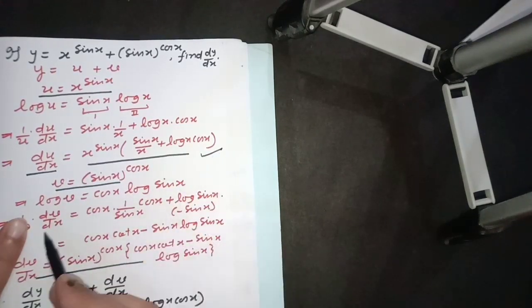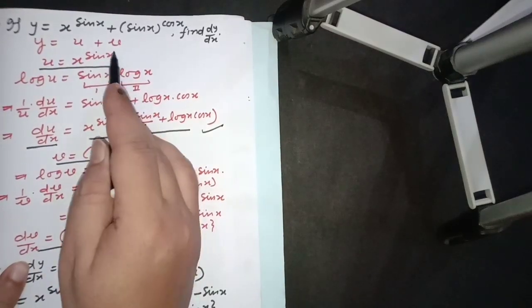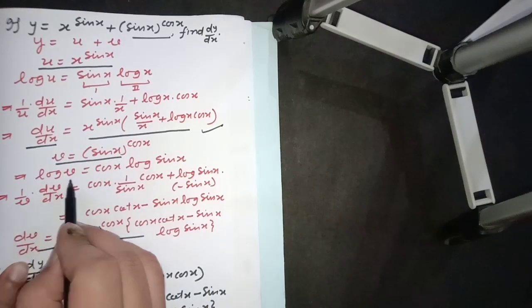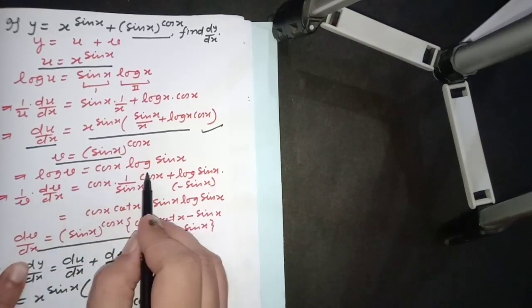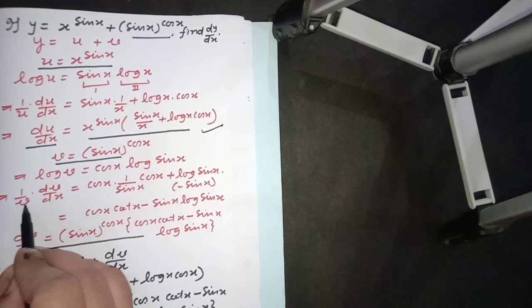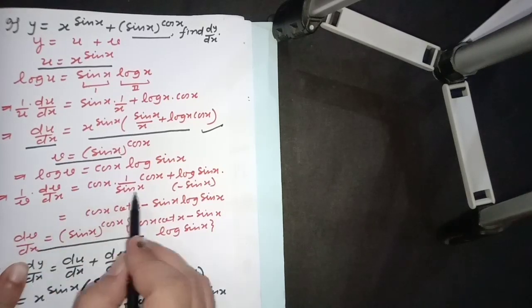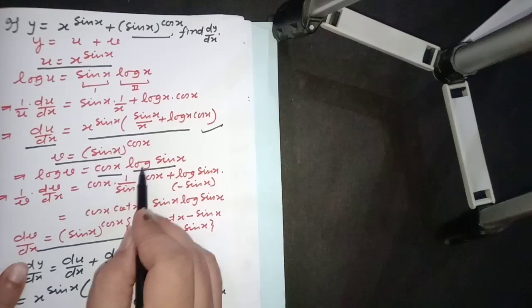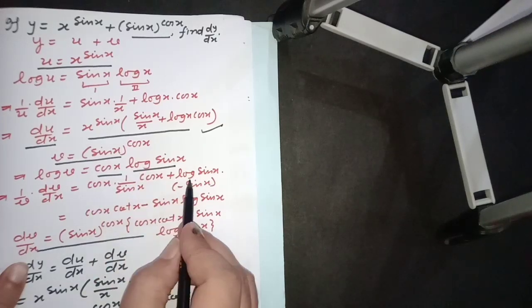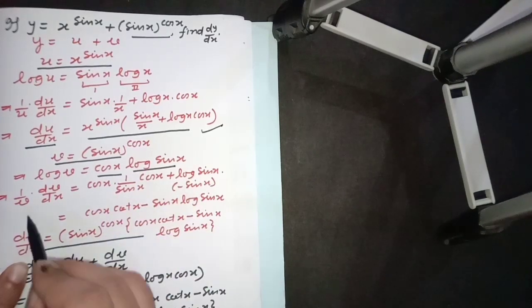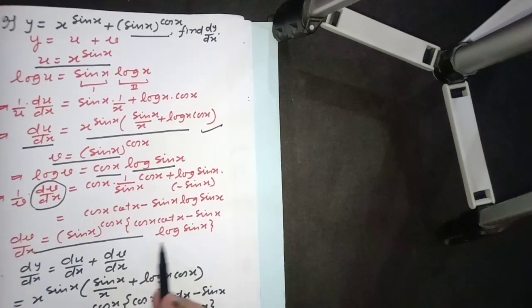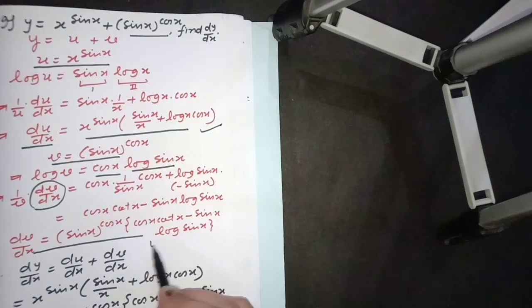After that, second function is (sin x)^(cos x). So take log on both sides: log v will come out cos x times log sin x. Again differentiate with respect to x, and the same result will come. Here will be also two functions: first term times differentiation of second, plus second times differentiation of first. And v will be cross multiplied in order to evaluate dv upon dx.